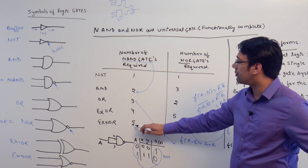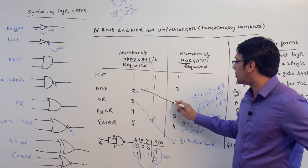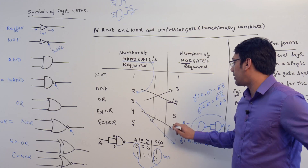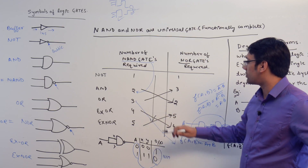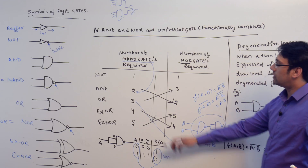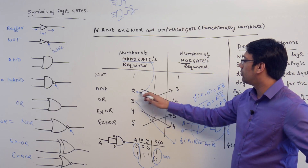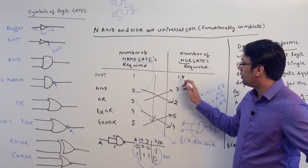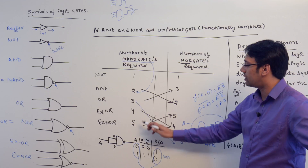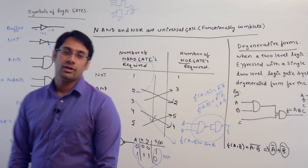You can remember it like this. For NAND gates — NOT, AND, OR, XOR, XNOR — the counts are 1, 2, 3, 4, 5. For NOR gates, the sequence is 1, 3, 2, 5, 4 — basically a cross-swap of the NAND sequence. So you can easily remember how many gates of each type are required to create any given gate.